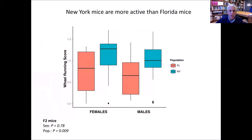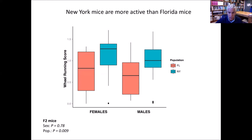New York mice are also more active than Florida mice, measured using a simple wheel-running assay. Those are some of the phenotypes. The interest in genome scans is that we can query the genome agnostically with respect to phenotype — identify genes that show signatures of selection and let the genome tell us what traits might be important.